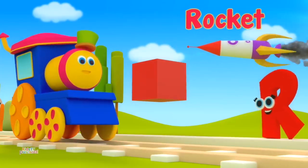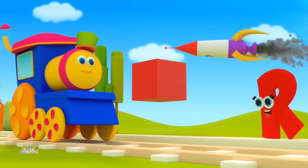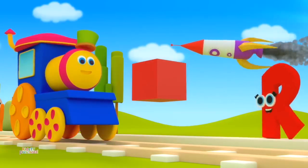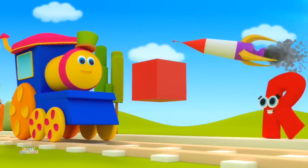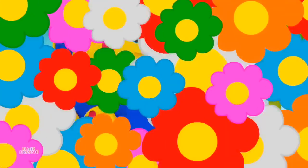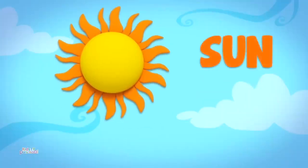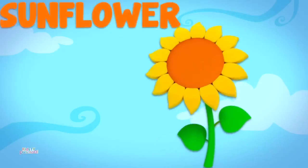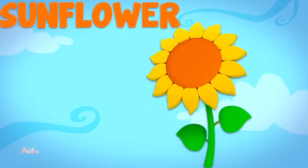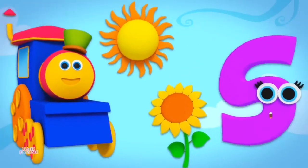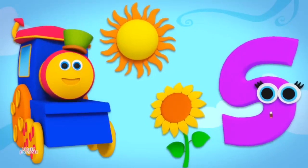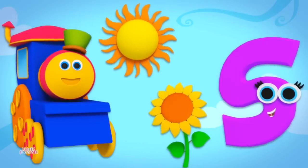R, R, Rocket. R is for R, R, R, Red. R is for R, R, R, Rocket. S is for Sun, S, S, Sun. S is for Sunflower, S, S, Sunflower. S is for S, S, S, Sun. S is for S, S, S, Sunflower.